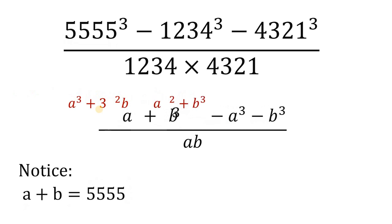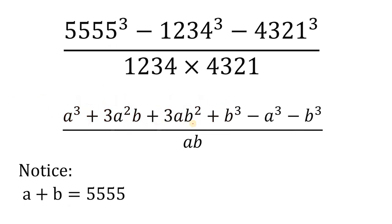So if we do that, we get a³ + 3a²b + 3ab² + b³ - a³ - b³. Notice that we can cancel out a³ and b³ on the numerator.